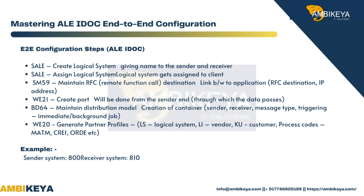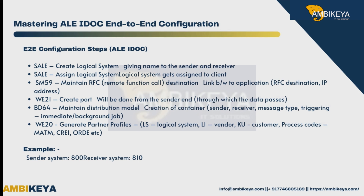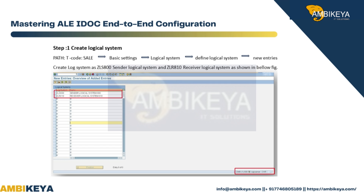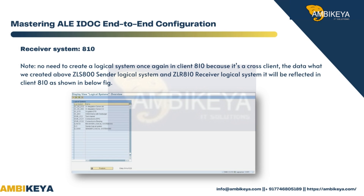Example: Sender system — client 800; Receiver system — client 810. Note: There is no need to create a logical system again in client 810 because it is cross-client. The data created above — ZLS800 (sender logical system) and ZLR810 (receiver logical system) — will be reflected in client 810 as well.